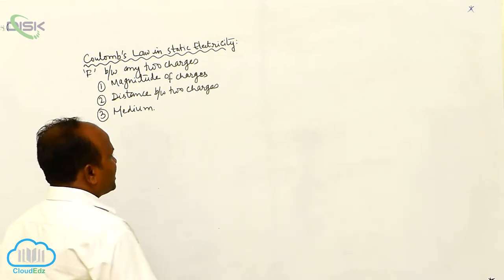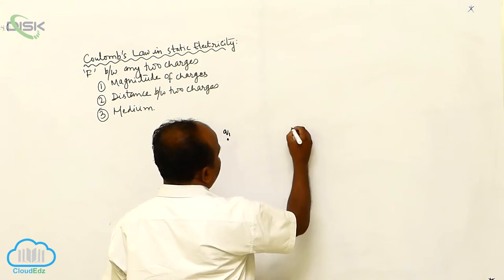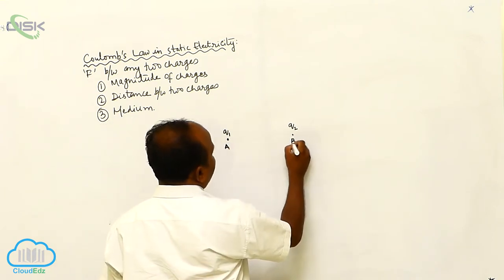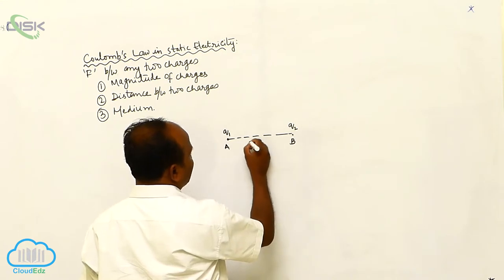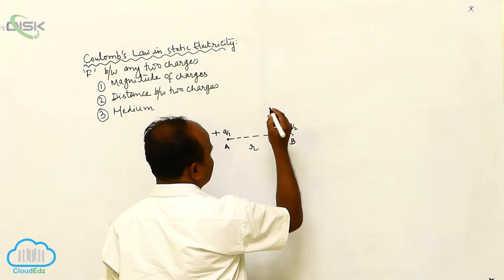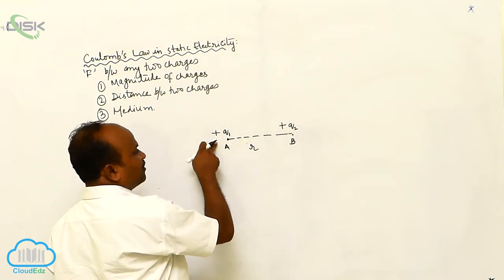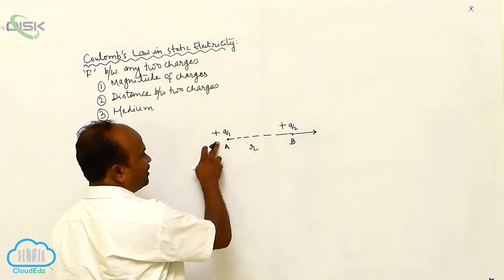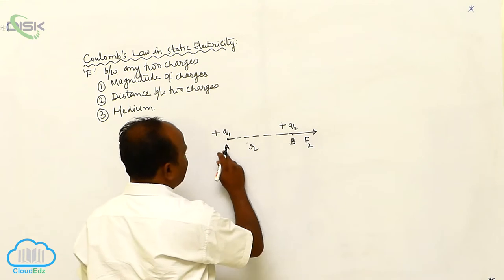Now we shall explain. Let us consider one charge Q1 at position A, and another charge Q2 at position B. The separation between them is represented by R. Both are positive charges. The charge Q1 applies force on Q2, and Q2 applies force on Q1 — they repel each other. This repulsive force is the force on the second charge by the first charge.